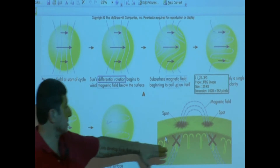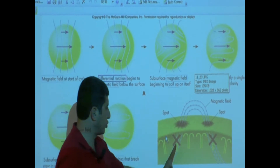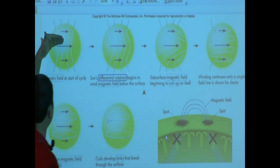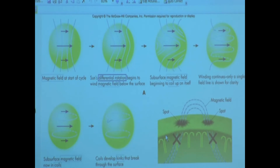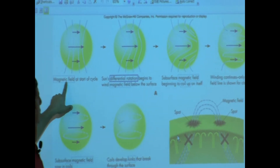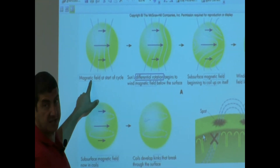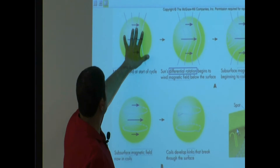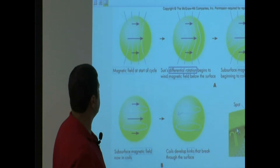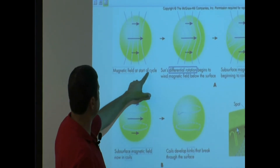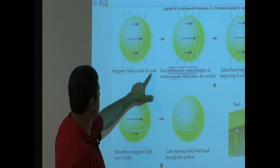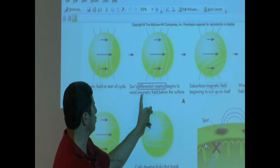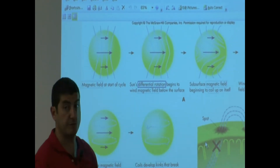I showed you this earlier — how the sunspots are created — but let's start from here. What happens to make this thing start? Well, first you have a magnetic field like this, nice and easy. If you see the magnetic field at the start of a cycle, then the sun's differential rotation begins to wind the magnetic field below the surface.